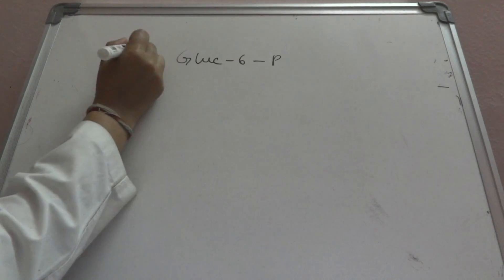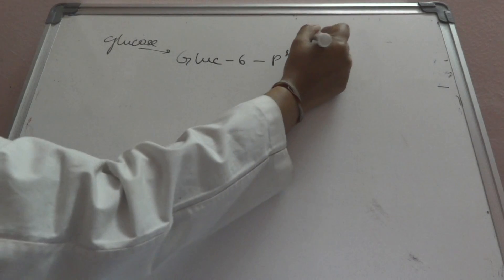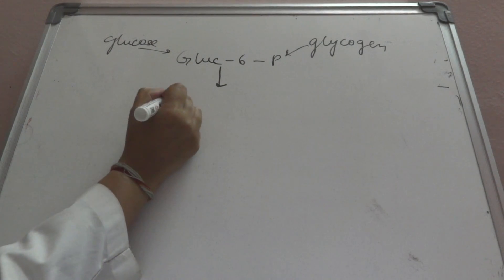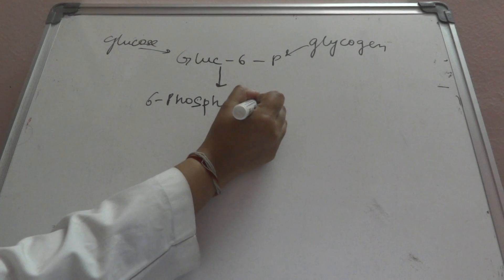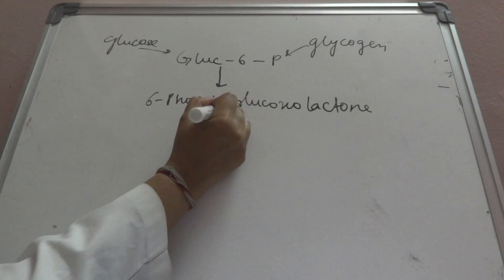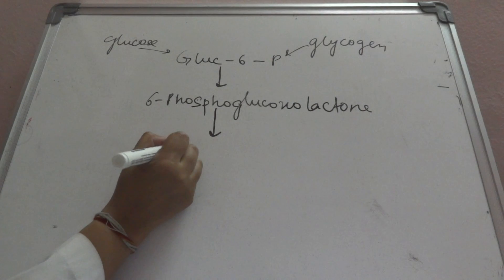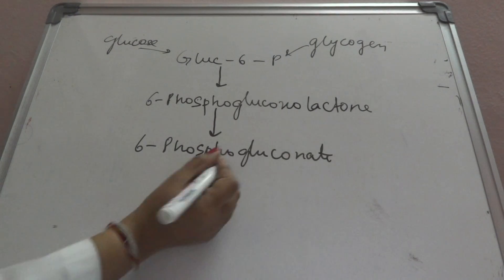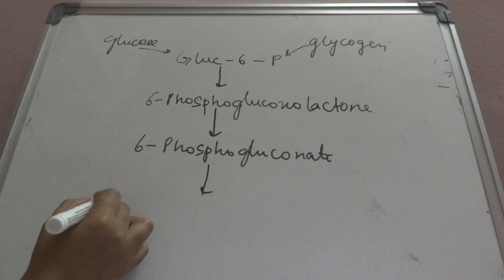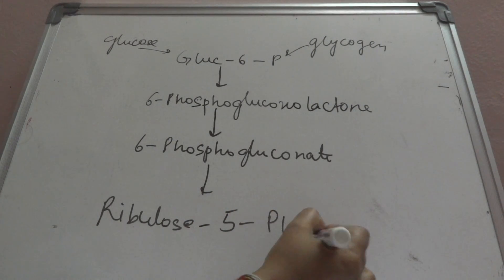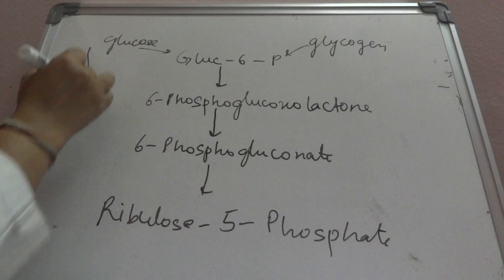In the oxidative phase, we have glucose-6-phosphate, which we can either get from glucose or from glycogen. This glucose-6-phosphate will form 6-phosphogluconolactone, then 6-phosphogluconate. This finally will form ribulose-5-phosphate, and this is where the oxidative phase ends.